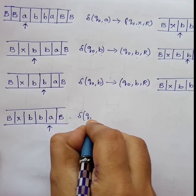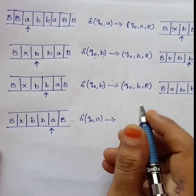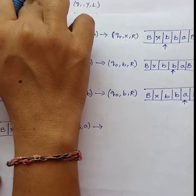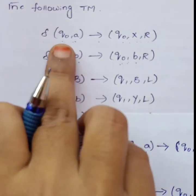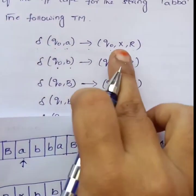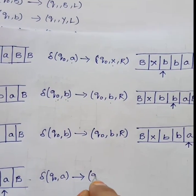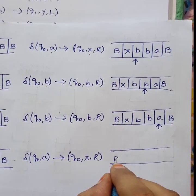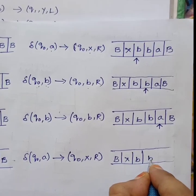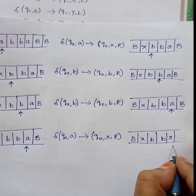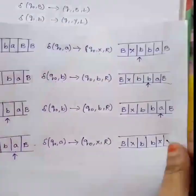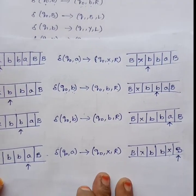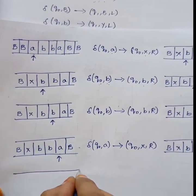Delta of Q0 comma A which tends to Q0 comma X comma R. I am applying this transition again — this A is replaced by capital X. So Q0 comma capital X: A is replaced as capital X. The read/write head moves one step right. So now on the tape we have B, X, B, B, X, B — the direction indicates the read/write head has moved right one step.